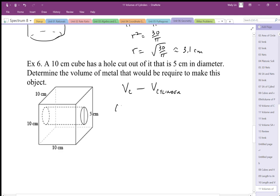Minus the volume of the cylinder is going to be the area, which is going to be π times r².